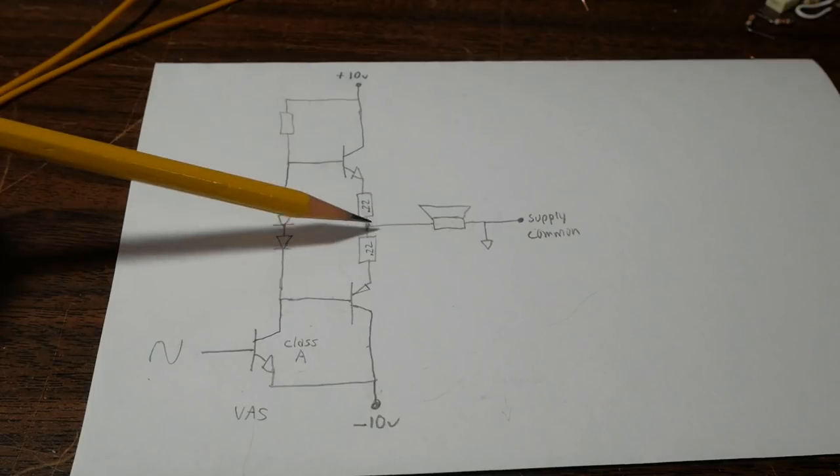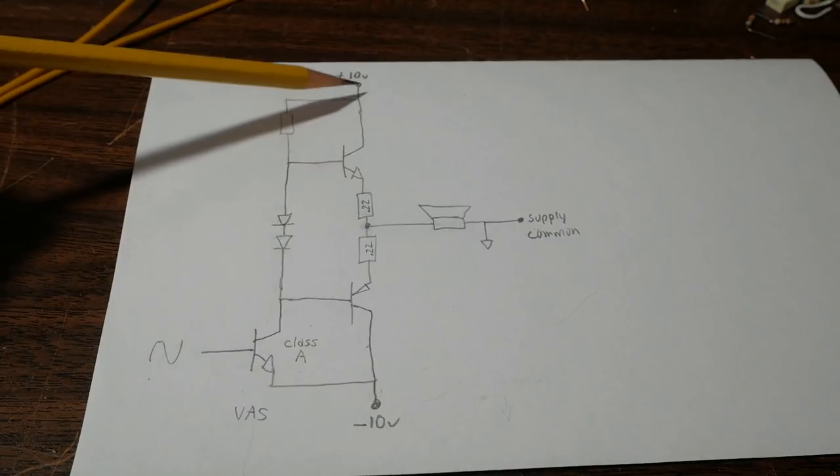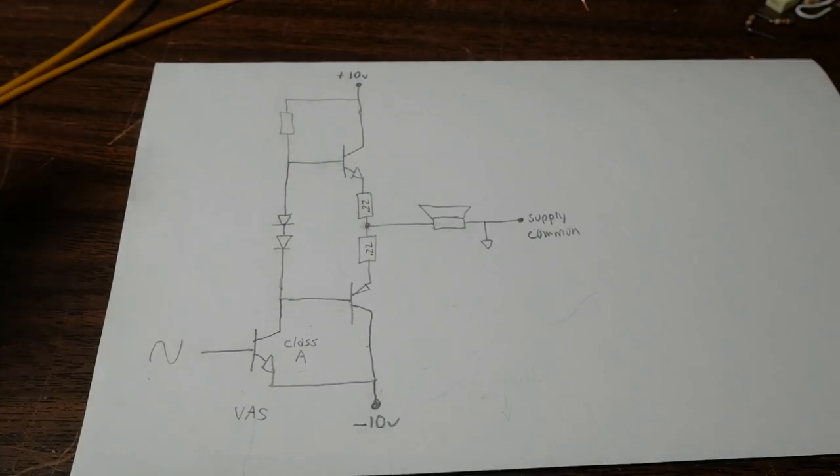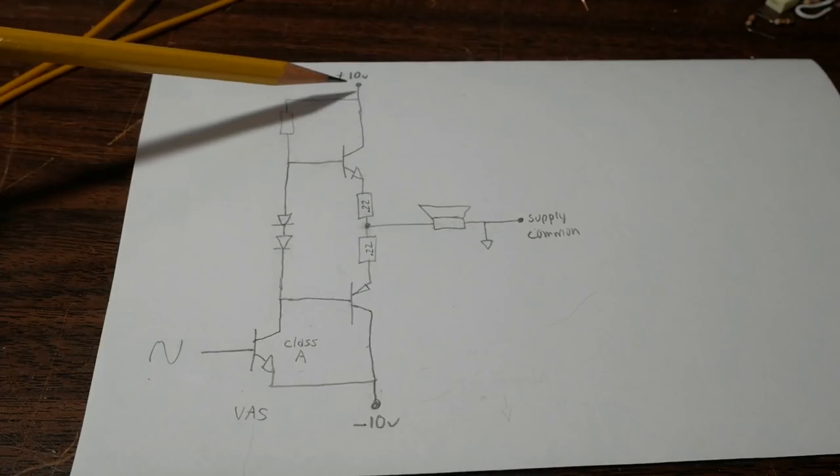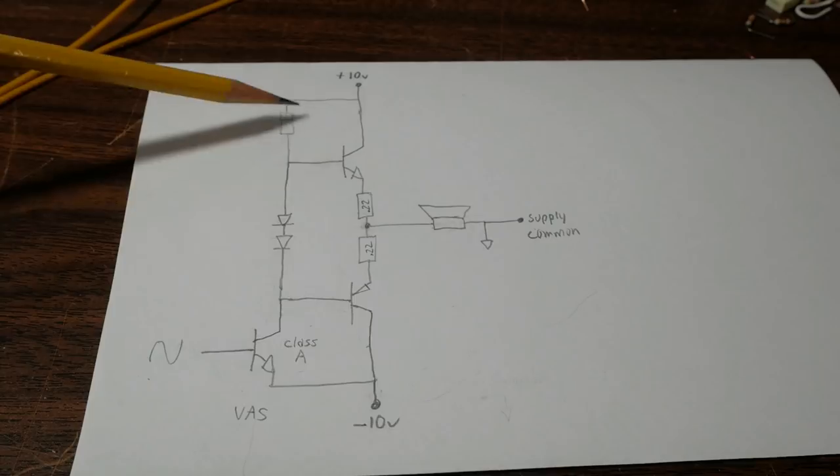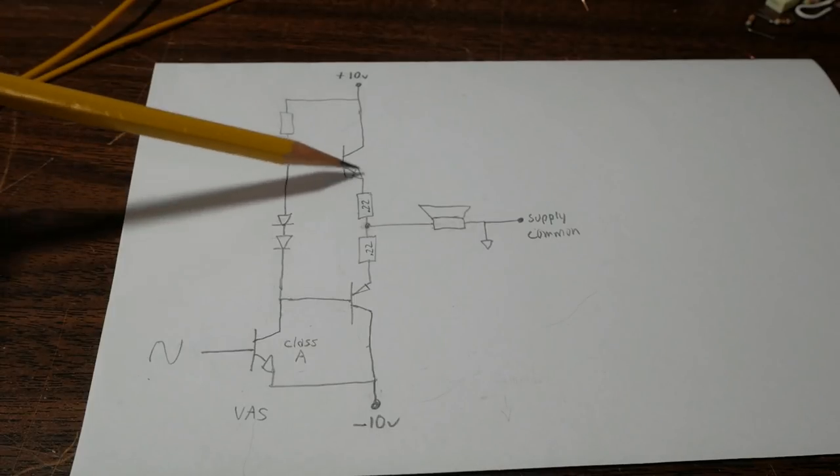Now of course, in the real world, the transistor cannot get all the way to the supply voltage. If it did, there would be zero current available and it couldn't get there anyway. So the point I'm trying to make, as this voltage approaches the positive supply, the voltage drop across this resistor gets smaller and smaller and the current gets less and less.